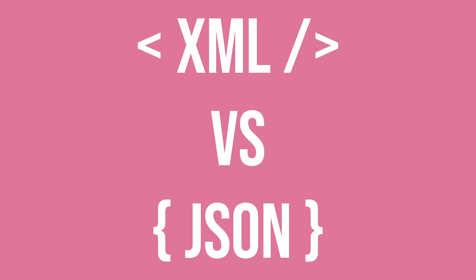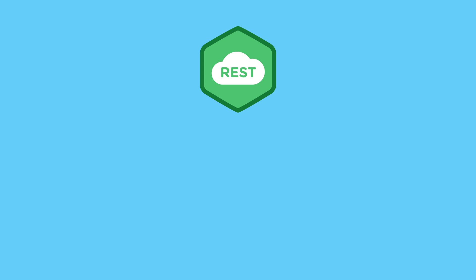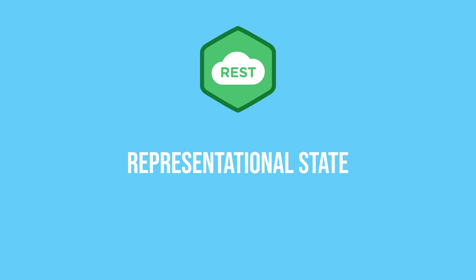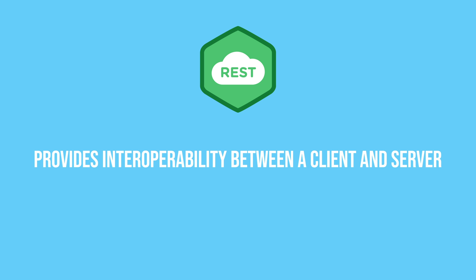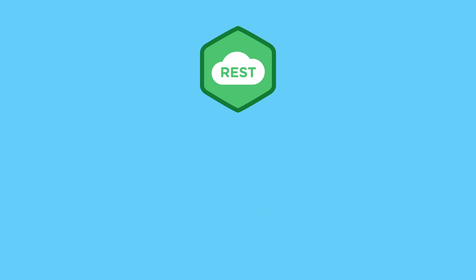Most modern APIs use JSON, but some older ones may use XML, so you should be familiar with both. The client and server need an agreed-upon way to send requests so they can understand one another. One popular way is REST, which stands for representational state transfer. A service implementing the REST architecture is called a RESTful service. REST provides interoperability between client and server and is defined by its architectural style.